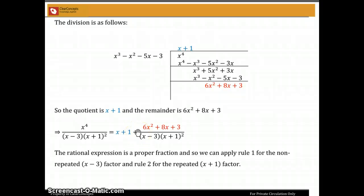So here the division proceeds as follows, and I am not going to explain that because that is stuff you have already learned in school. But the bottom line is we get x plus 1 as the quotient and 6x squared plus 8x plus 3 as the remainder.